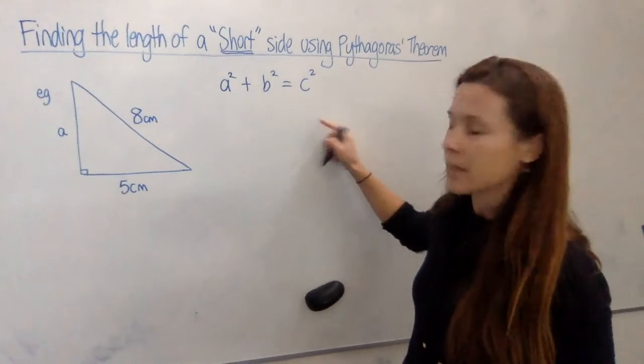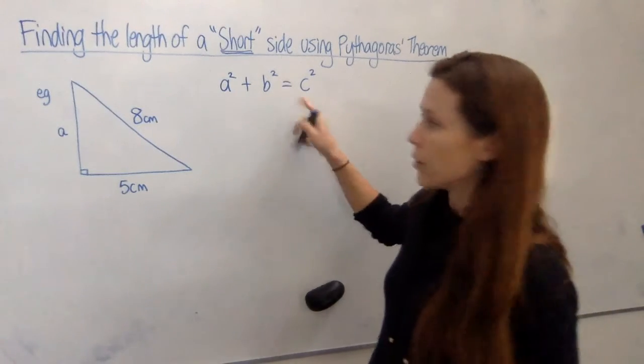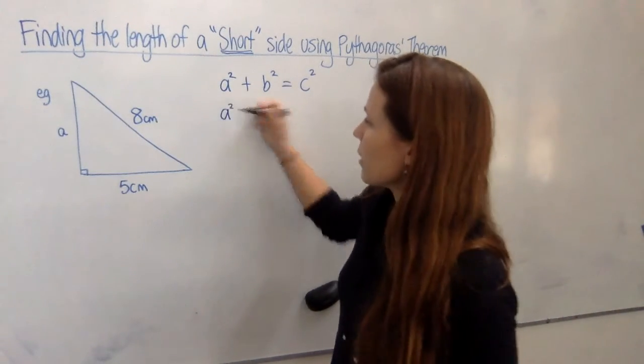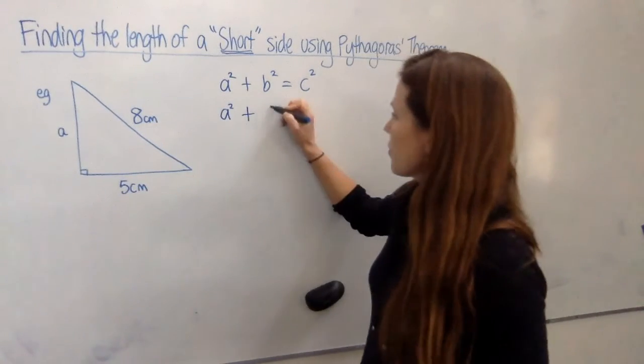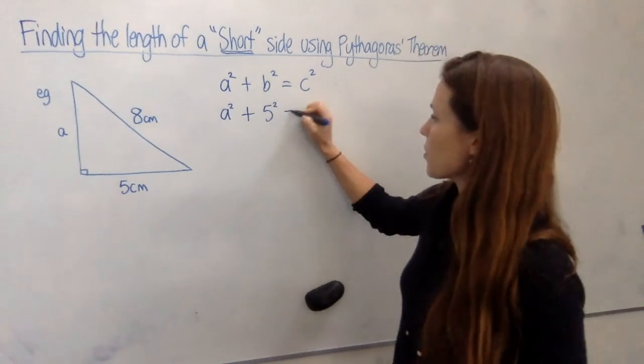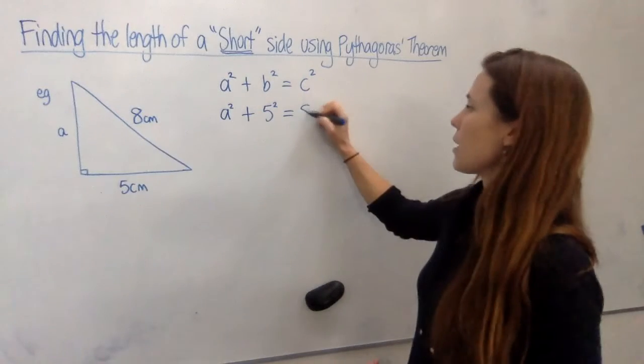So on the second line, go ahead and substitute in what you know. We don't know a, so we can only write a². That's as good as it gets. But we know that b is 5, so we have 5², and that all equals 8².